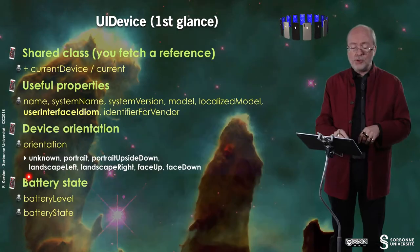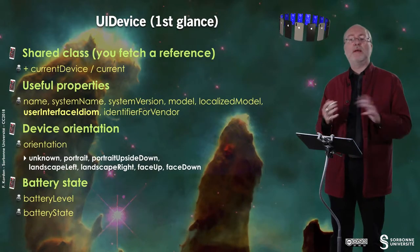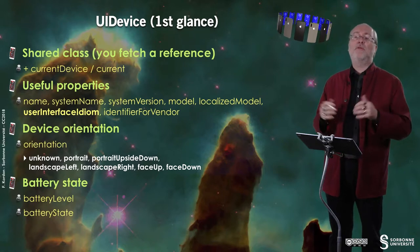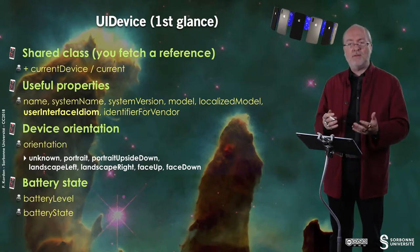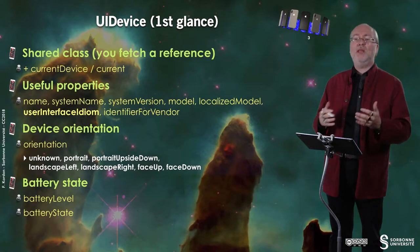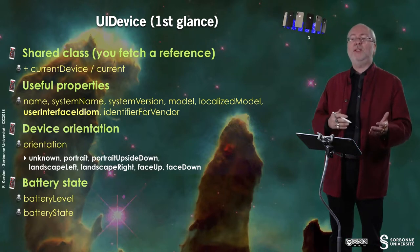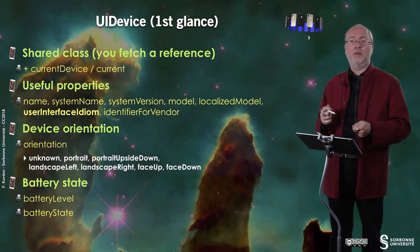You also have two attributes called battery level and battery state. Battery level provides you with the current battery charge. Battery state allows you to know if the battery is fully charged and the device is connected, if it is discharging, or if it is charging but not yet fully charged.